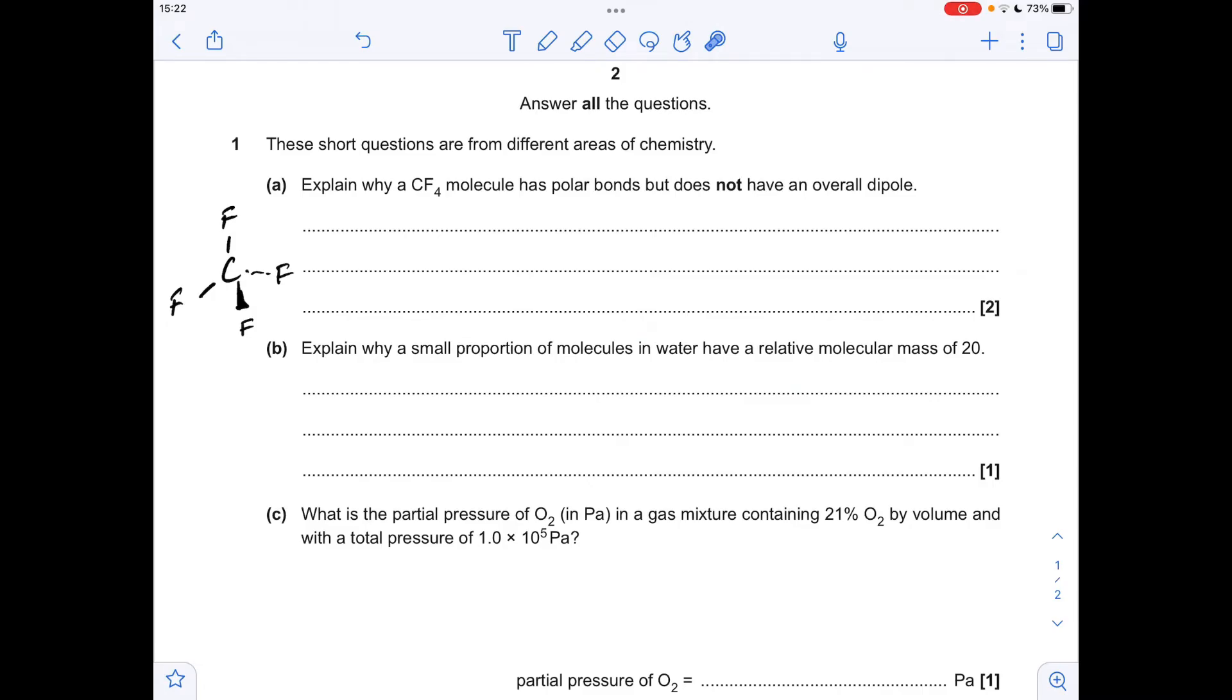It's down to the fact that fluorine is the most electronegative atom, and so therefore there's a difference in electronegativity in these bonds making them polar. The molecule doesn't have an overall dipole because the molecule is symmetrical, so all these identical dipoles cancel out.